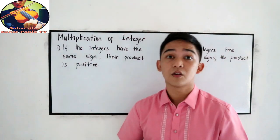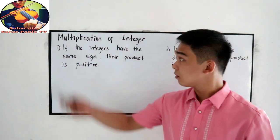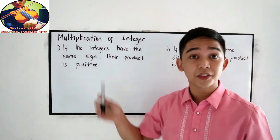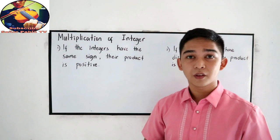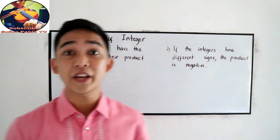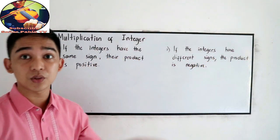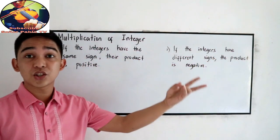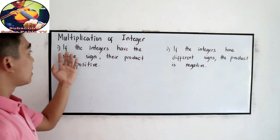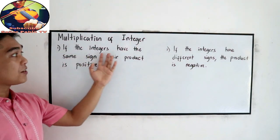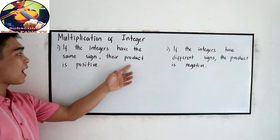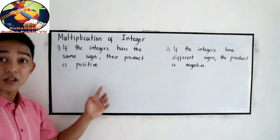Now, our third operation: multiplication of integers. We have two basic rules, and this is very easy compared to the addition and subtraction rules. If the integers have the same sign, their product is positive.